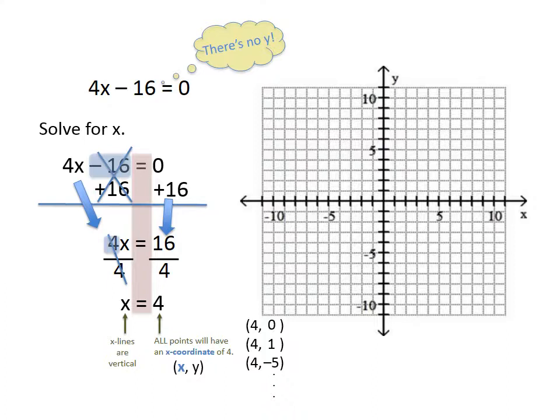So we've picked the points. I'm going to graph them now. 4, 0 would be at 4, 0 on the x-axis there. 4, 1 comes over 4 and up 1. And 4, negative 5 comes to the right 4 and down 5. Notice that they are lined up vertically, because all x lines are going to be vertical, and you can draw the line through it.